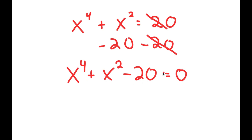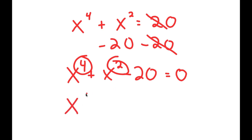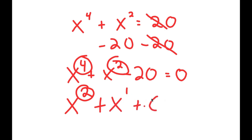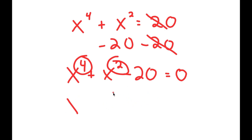Now this may seem like a quadratic equation, but it's not, because we have the power of 4 as our primary term, and then that's followed by the power of 2. In a normal quadratic equation, we have 2 as our primary, then we just have 1, and then we have some constant c.